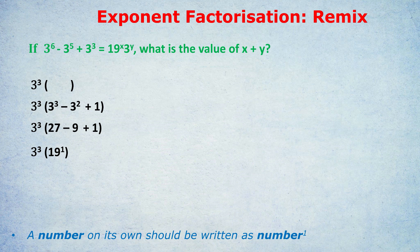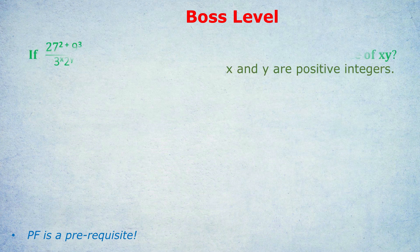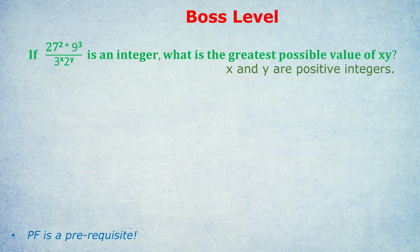But now we get to another core aspect of the video that I wanted to touch on, which is the boss-level question and its extra complications. So with this question, feel free again to pause the video and try it yourself. The question is, if 27 to the power of 2 plus 9 to the power of 3 over 3 to the power of X, 2 to the power of Y is an integer, what is the greatest possible value of XY? So toughie.